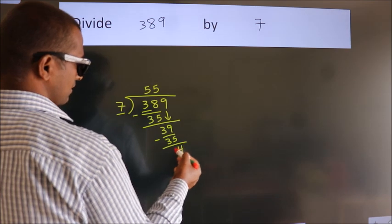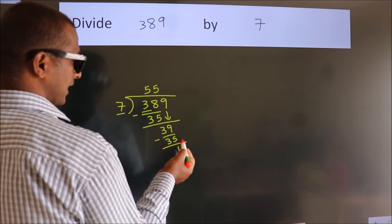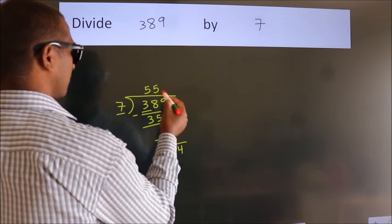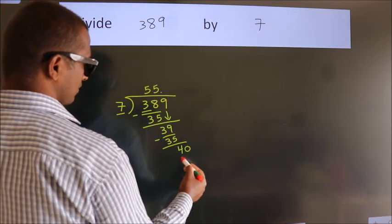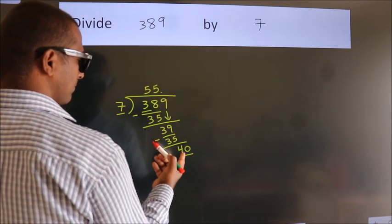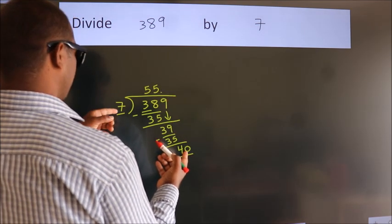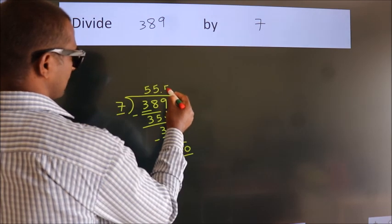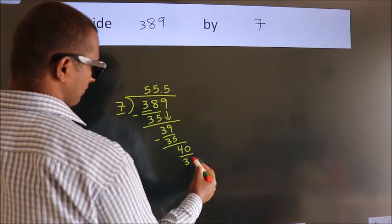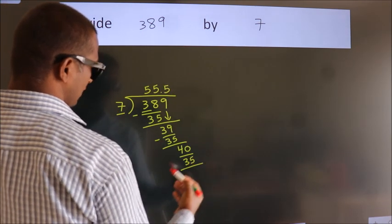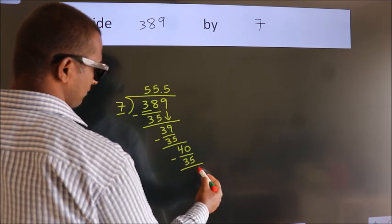After this, no more numbers to bring it down. So, what we do is, we put dot take 0. So, 40. A number close to 40 in 7 table is 7 fives 35. Now, we subtract. We get 5.